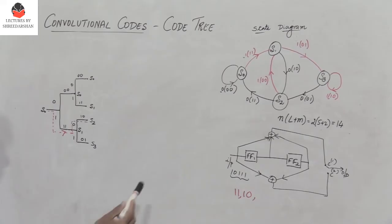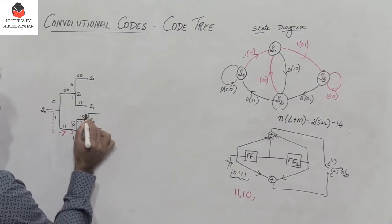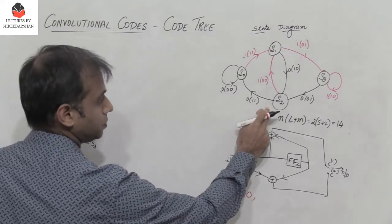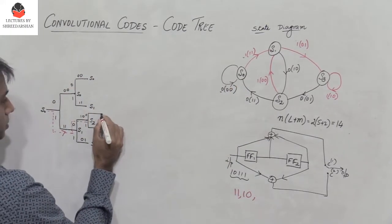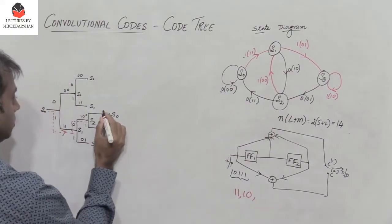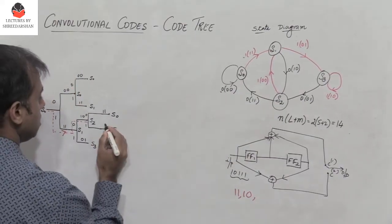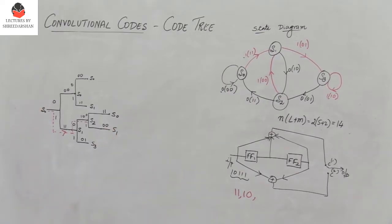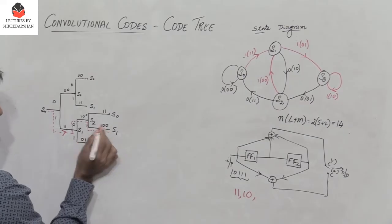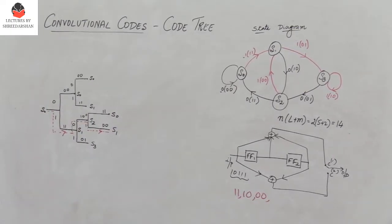The third input bit is 1. I am in state S2. With input 0, I would go to S0 with output 11; but with input 1, I go to state S1 with output 00. Since the input is 1, I move downwards to S1 and the output is 00.